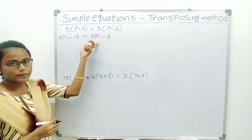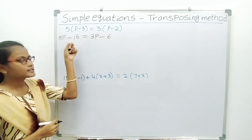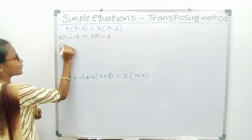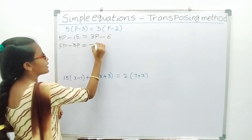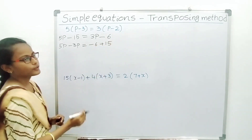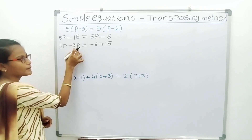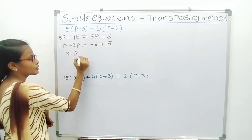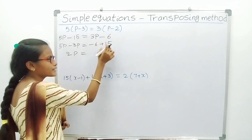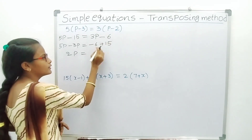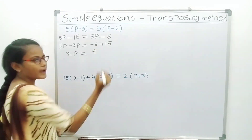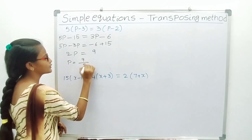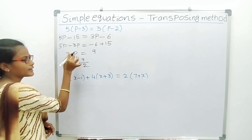Transpose 3P from RHS to LHS and minus 15 from LHS to RHS. We can transpose at a time. So 5P minus 3P equals minus 6 plus 15. Plus 3P changes to minus 3P, and minus 15 changes to plus 15. Minus 6 plus 15 is 9. We have to find variable P. P is equal to 9 by 2.